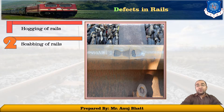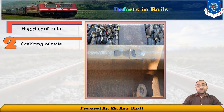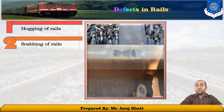Scabbing of rails occurs due to the falling of patches or chunks of metal from the rail table — the upper portion of the rail. These patches and chunks falling on the upper table are called scabbing of rails. Scabbing is generally seen in the shape of an elliptical depression, where the surface reveals a progressive fracture with numerous cracks on the surface.